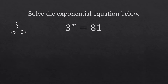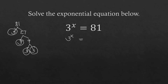Continuing the factor tree: 27 breaks into 3 and 9, and 9 breaks into 3 and 3. So base 3 appears 1, 2, 3, 4 times, meaning 81 equals 3 to the power of 4. Since the bases are now the same, we equate the exponents: x equals 4. You can verify by plugging x = 4 back into the original equation to confirm you get 81.